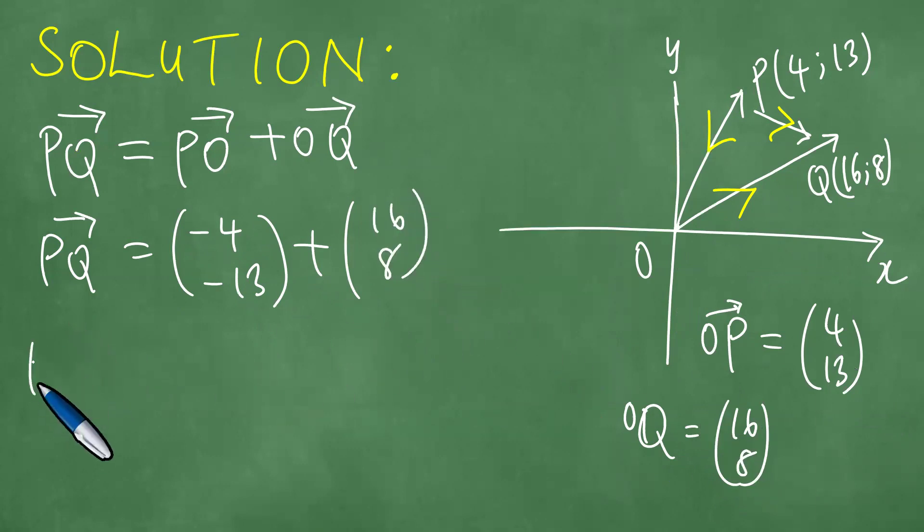And then now we add these things up, which means 16 minus 4, which is 12, and minus 13 plus 8, which is minus 5. Which means that you have PQ, which is actually 12 and minus 5.